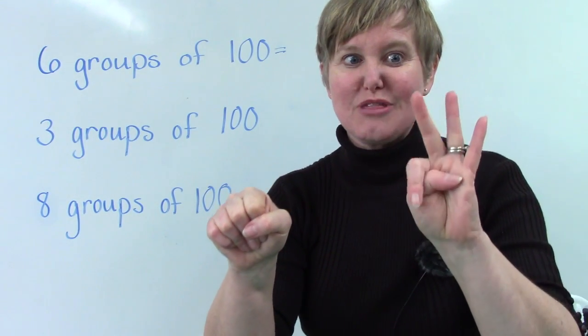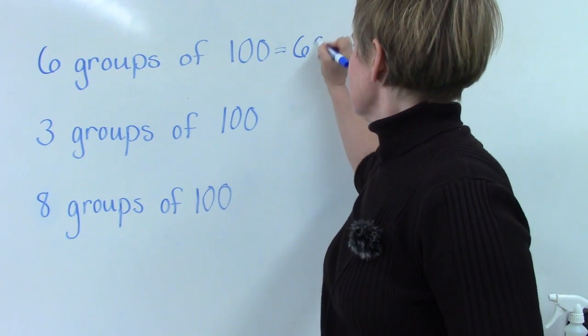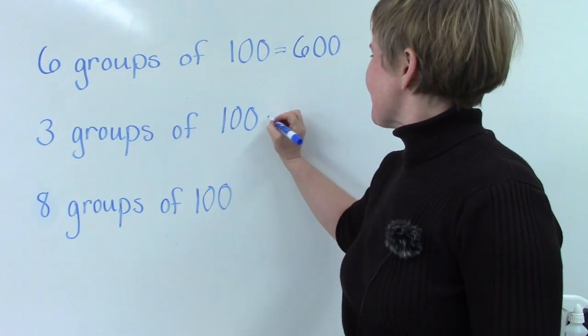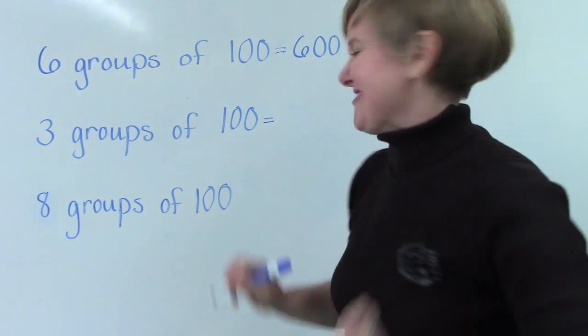One hundred, two hundred, three hundred, four hundred, five hundred, six hundred. All right, three groups of one hundred. One hundred, two hundred, three hundred.